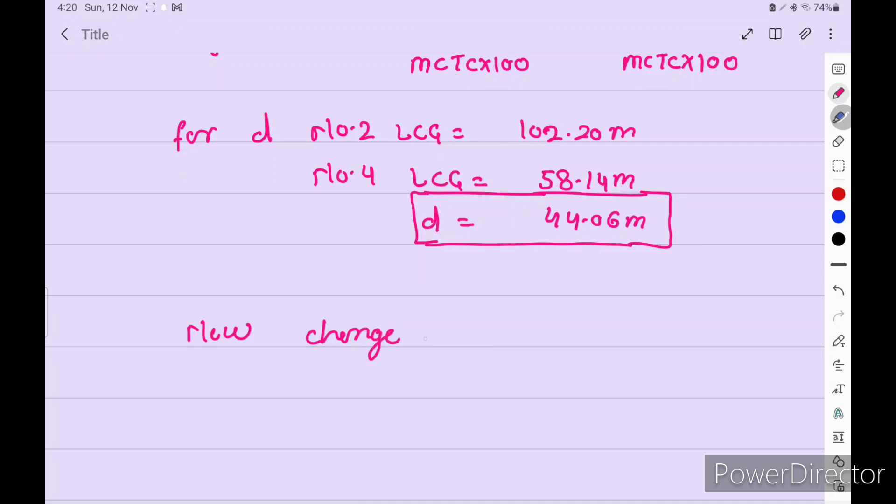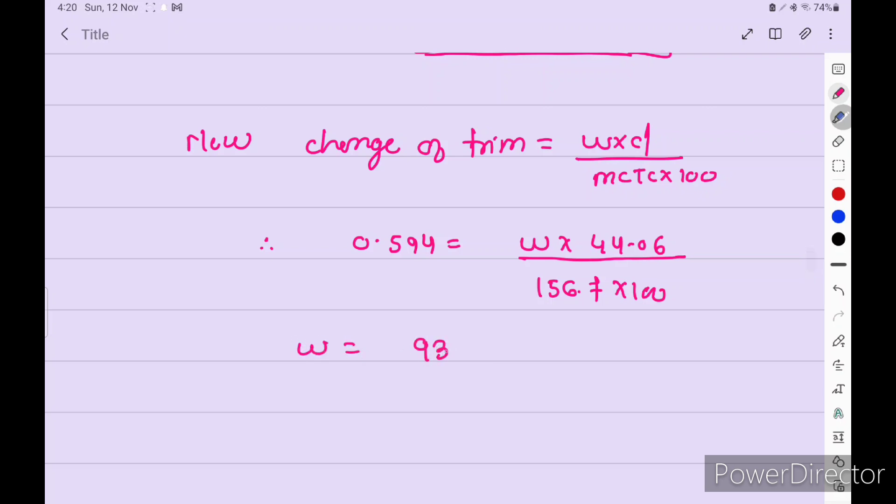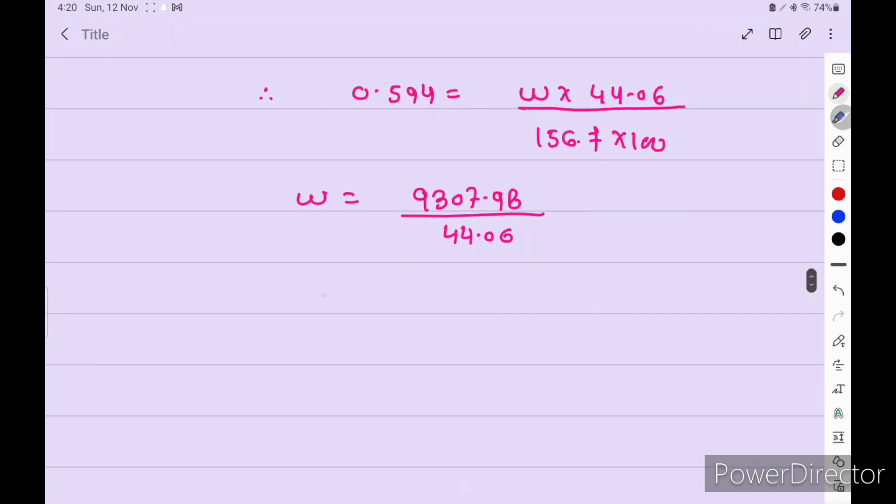Change of trim 0.594 equals w into 44.06 divided by MCTC into 100. We can find out w, so w equals 211.256 tons.